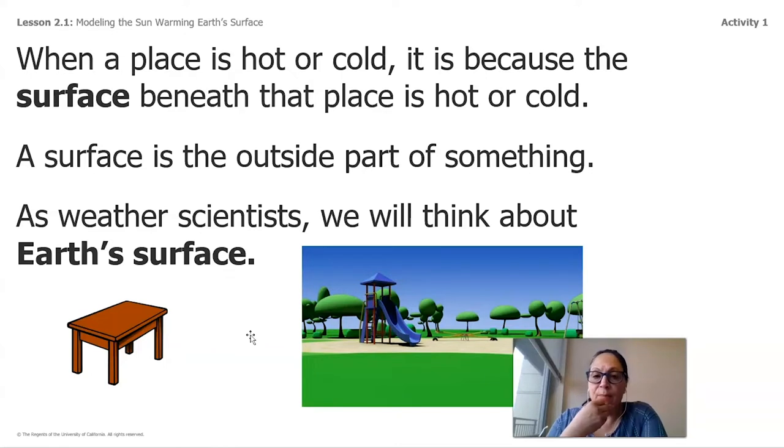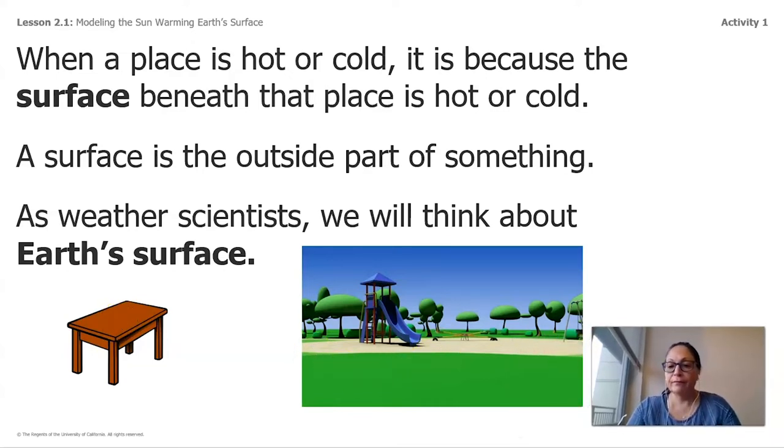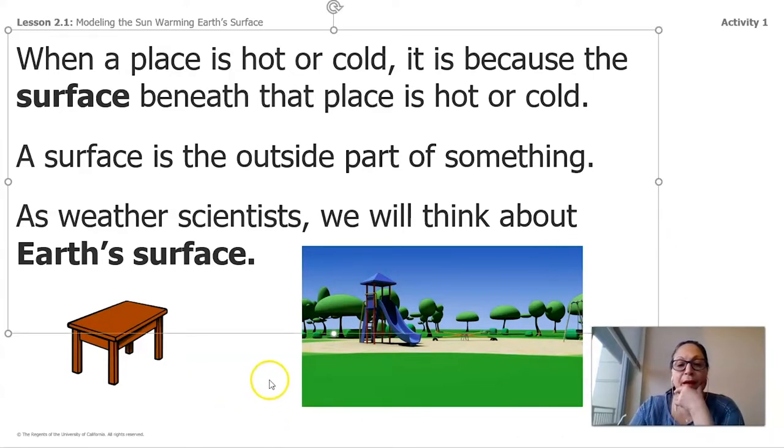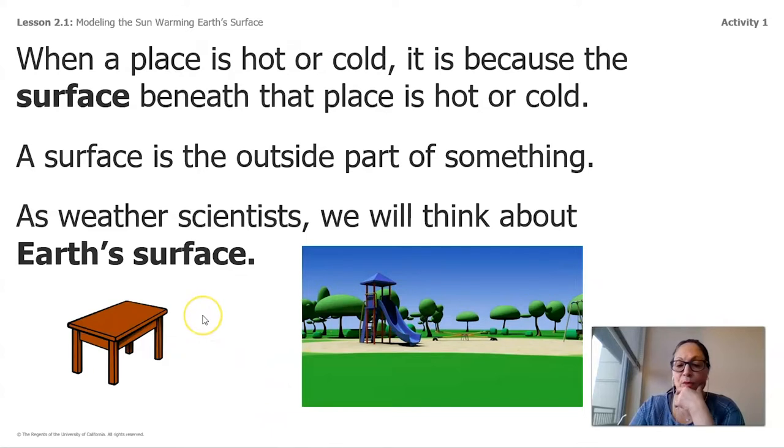When a place is hot or cold it is because the surface beneath that place is hot or cold. A surface is the outside part of something. As weather scientists, we think about the earth's surface. So we're talking about the surface. So here you look, you see a table. This is the surface of the table. And here you see a picture of a playground. And in looking at both of them, I can assume that the table is going to be on the inside of a room like in a classroom.